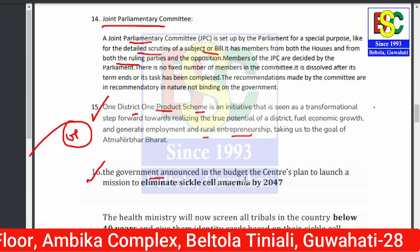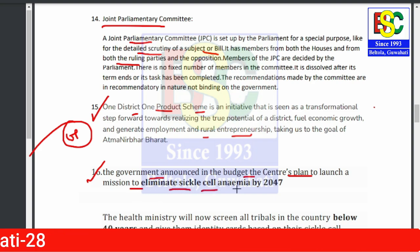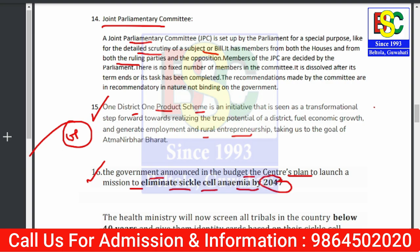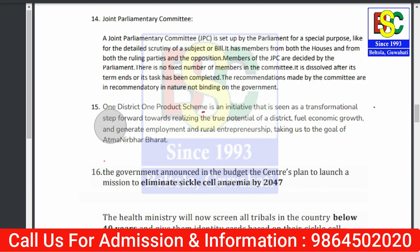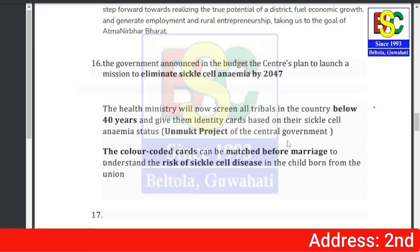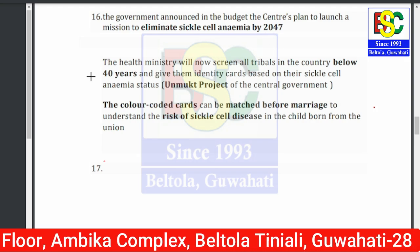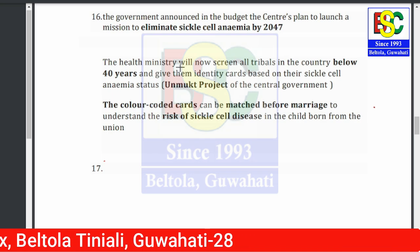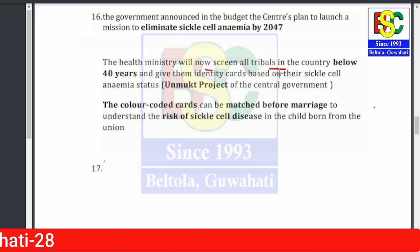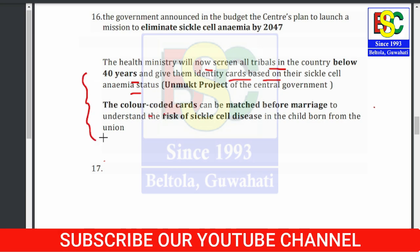Point number sixteen: The government announced in the budget a plan to eliminate Sickle Cell Anemia by 2047. Target-based questions are important for APSC — for example, India intends to provide tap water to all its citizens by 2024. The Health Ministry will screen all tribals below 40 years and provide identity-based cards for Sickle Cell Anemia. This scheme aims to eliminate Sickle Cell disease.